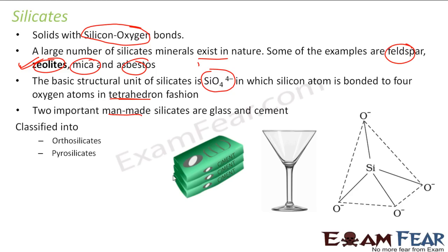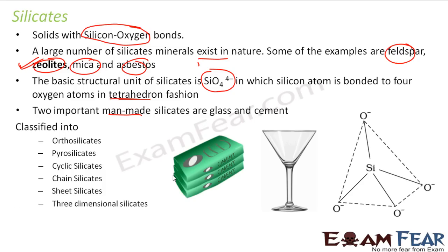Silicates are classified into various structural types: orthosilicates, pyrosilicates, cyclic silicates, chain silicates, sheet silicates, and three-dimensional silicates. We will not discuss the structures of each type in detail — just understand that these different structural forms of silicates exist in nature.